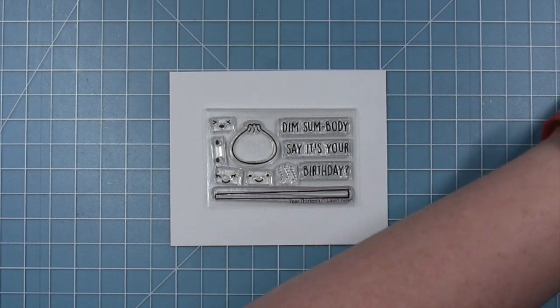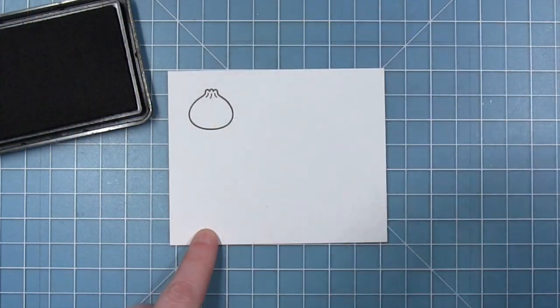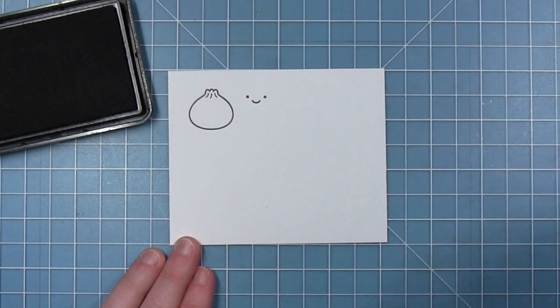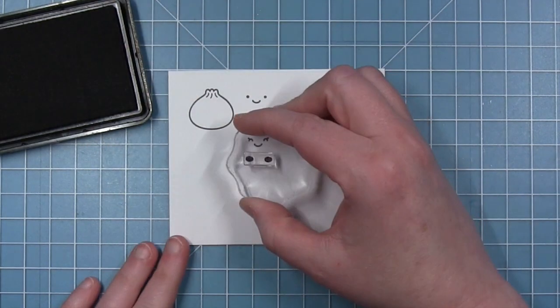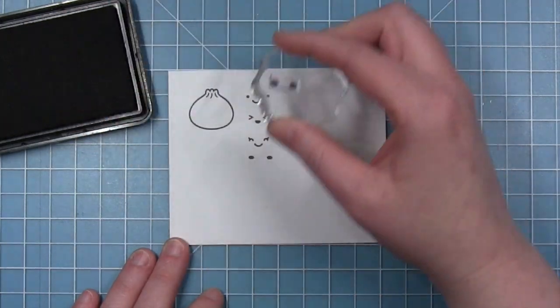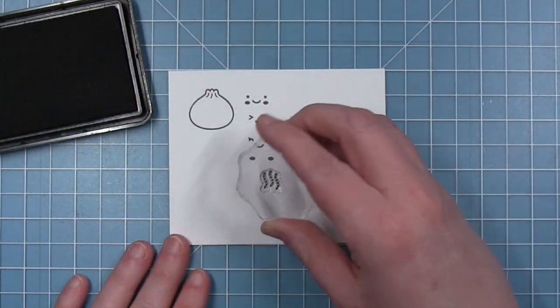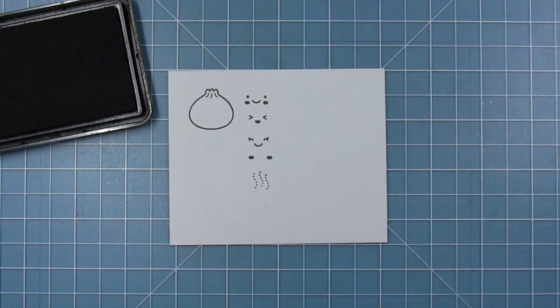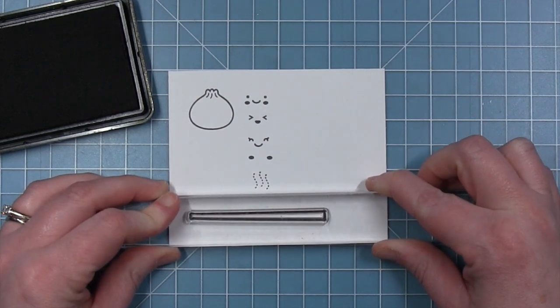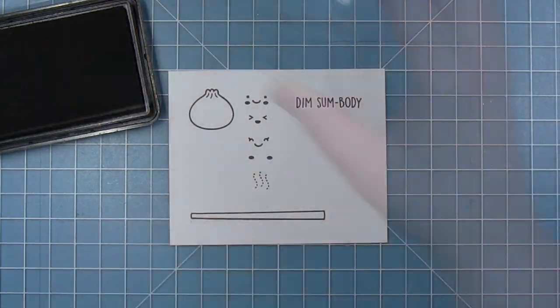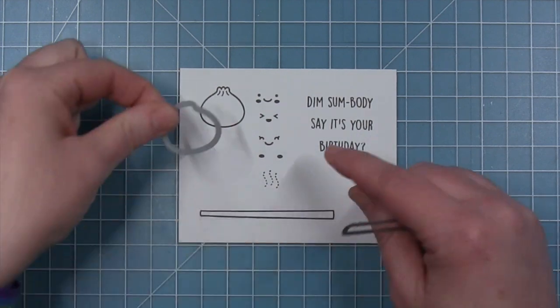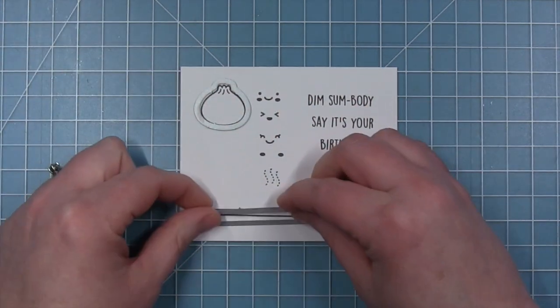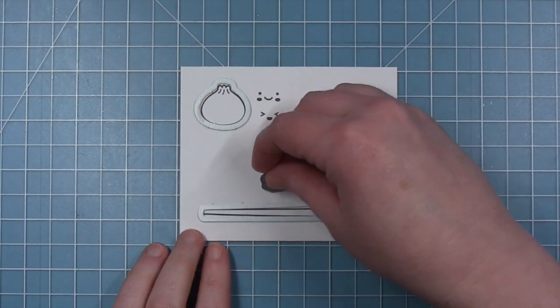This is the newest mini birthday stamp set celebrating Lawn Fawn's 13th year. In this stamp set we have the cute little steam bun and three smiley faces: the regular smiley face, the sourpuss face, and the face with little eyelashes. There's also a stamp for little cheeks, steam lines, a big chopstick, and the sentiment says 'dim somebody say it's your birthday.' There's also coordinating dies for the steam bun, chopstick, and steam lines.